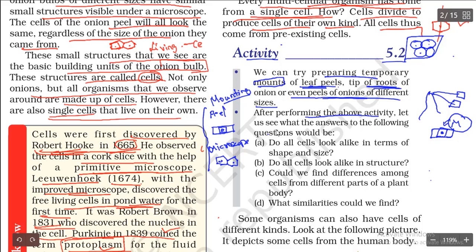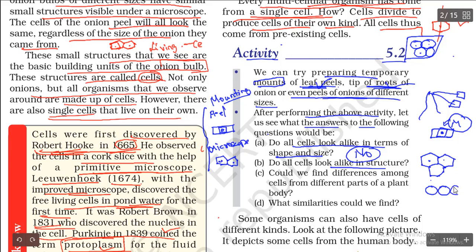After performing the activity, let's answer the following questions. First: do all cells look alike in shape and size? No - cells will be different for leaf, different for root, and different for other things. Second: do all cells look alike in structure? In onion peels we saw hexagonal cells, which are six-sided cells. In other things you may see round, rectangular, or square-shaped cells. So cells are of different structures.